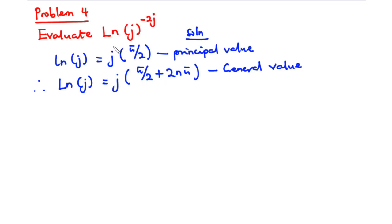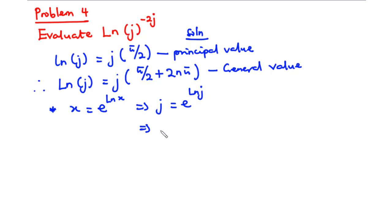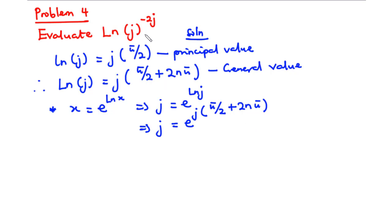Now let's evaluate ln of j to the power negative 2j. Using x equals e to the power ln of x, we have j equals e to the power ln of j, where ln of j equals j times (pi over 2 plus 2n·pi), with n being any integer. To find ln of j to the power negative 2j, we introduce the exponent, giving j to the negative 2j.